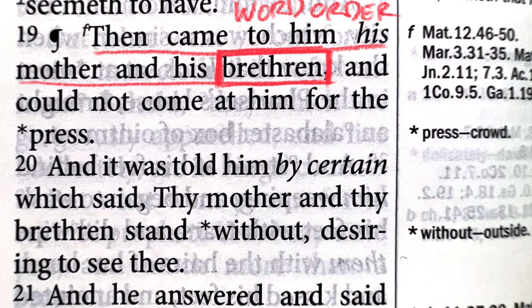Let's talk about another phrase: 'and could not come at him.' In contemporary English, what does it mean to come at someone? It's a very aggressive thing — to come at somebody is to make a plunge toward them that threatens to punch them or tackle them. We wouldn't say 'come at him.' We would say 'could not come near him.' That is a way they could speak in Elizabethan English that I just don't think is available to us anymore. It means something different now.